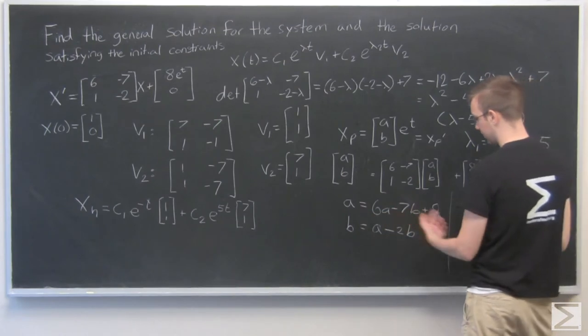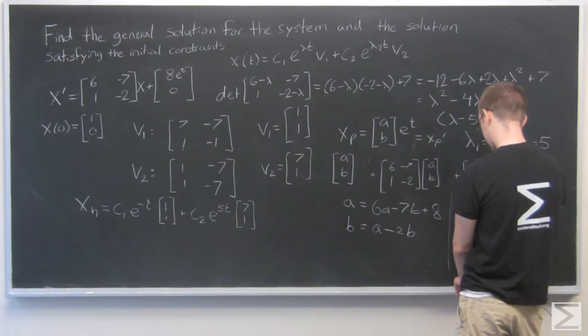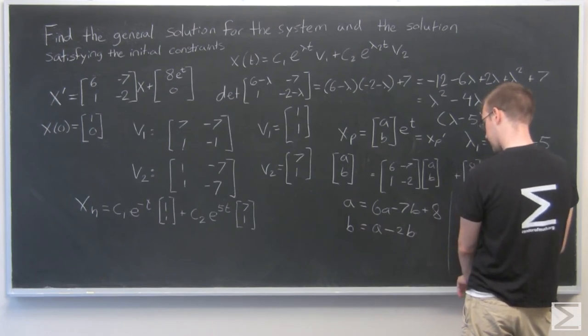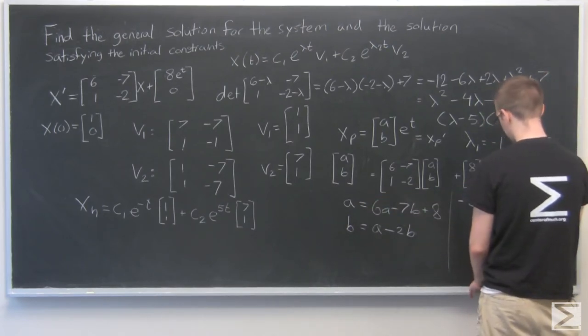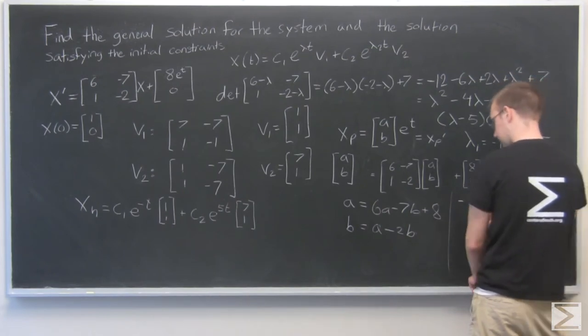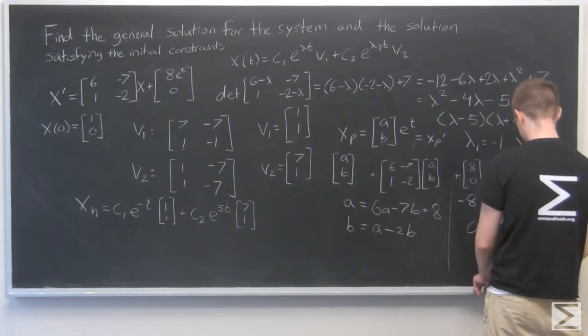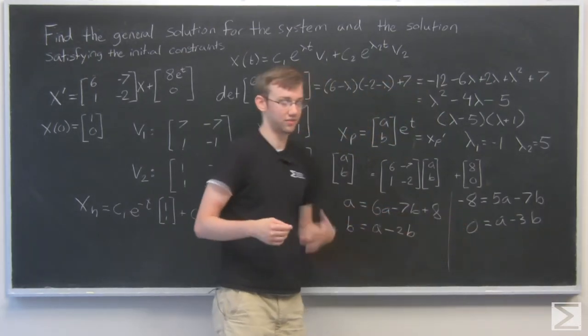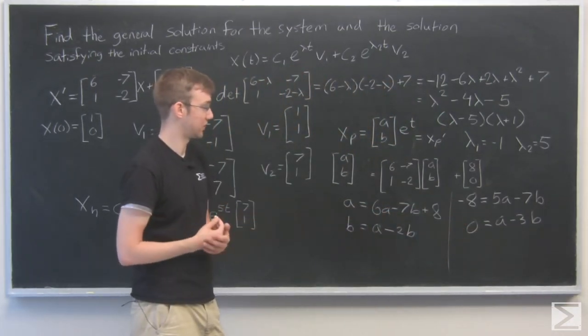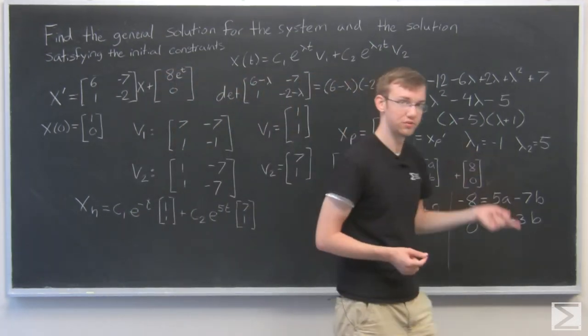So, -8 equals 5a - 7b and 0 equals a - 3b. Now it's just a system of equations like we're used to solving. So I'm going to put that into a matrix and solve that. I'm going to need to move to the next board.